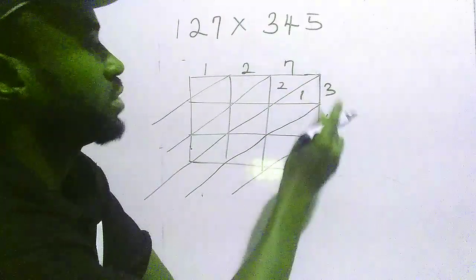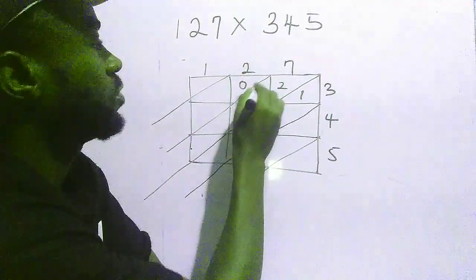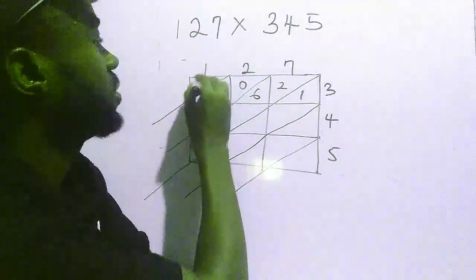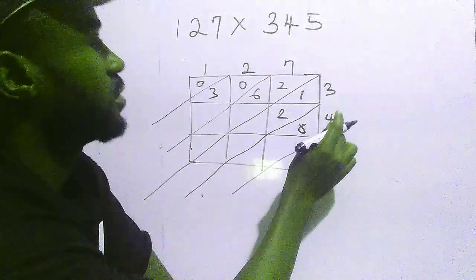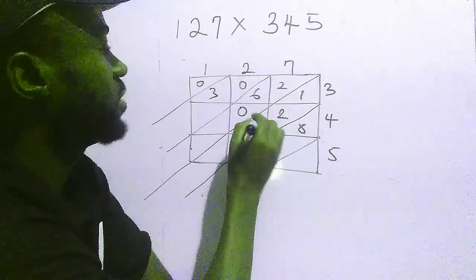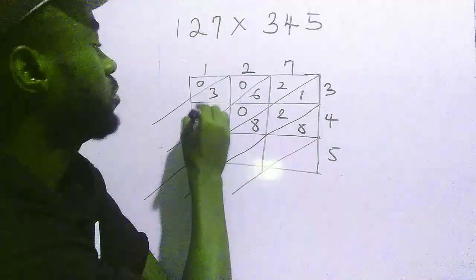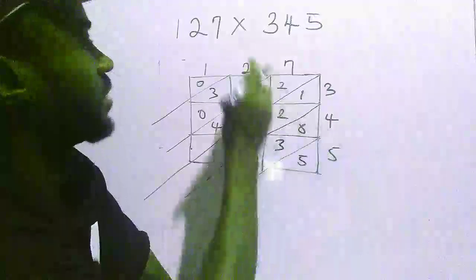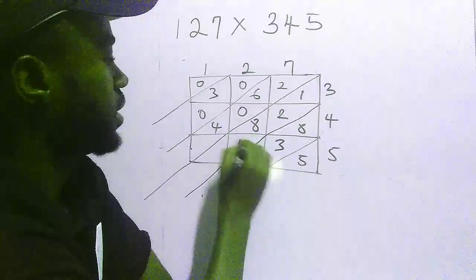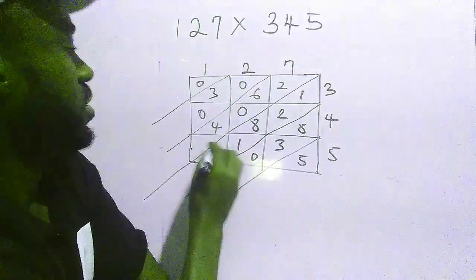Three times seven is 21. Three times two is 06. Three times one is 03. Four times seven is 28. Four times two is 08. Four times one is 04. Five times seven is 35. Five times two is 10. Five times one is 5.